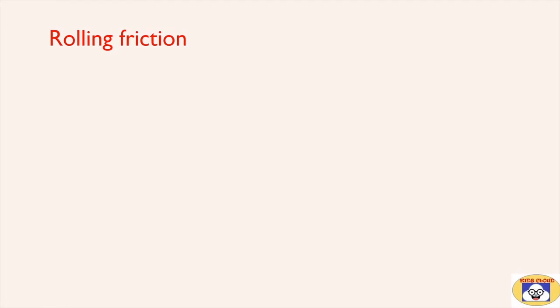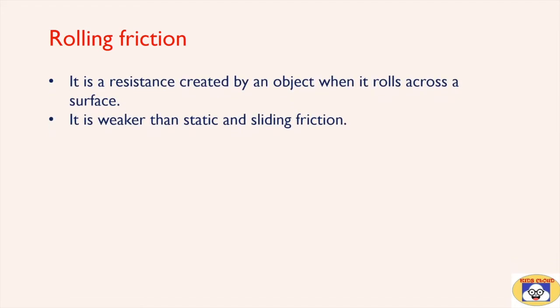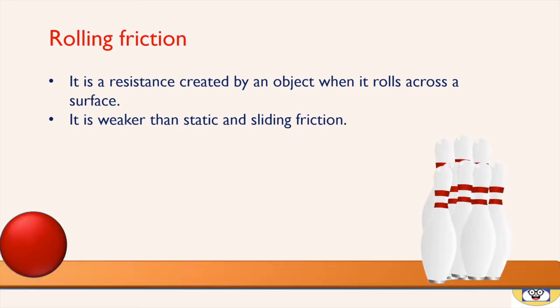Rolling is the second type of friction. It is a resistance created by an object when it rolls across a surface. It is weaker than static and sliding friction. In bowling, the player rolls a ball towards pins — it is an example of rolling friction.